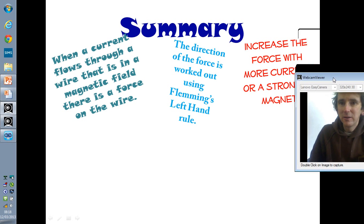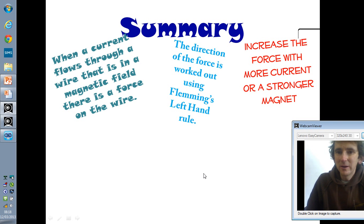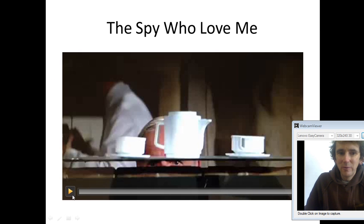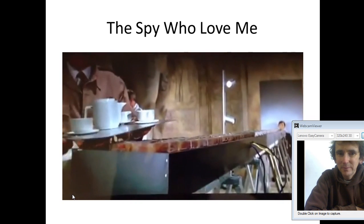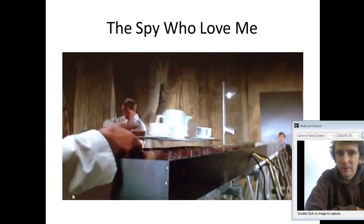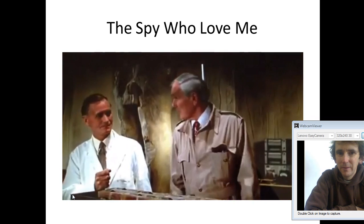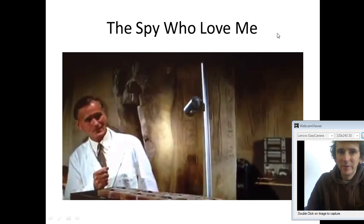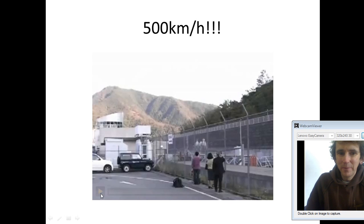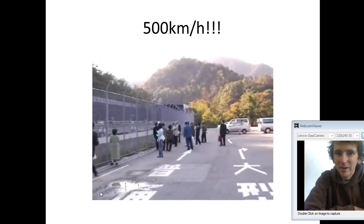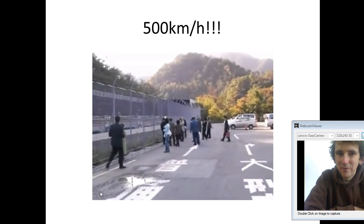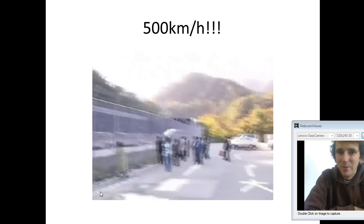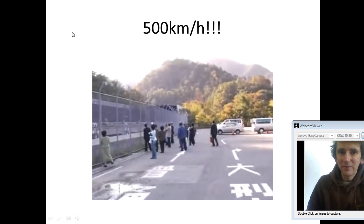We can increase the force with more current or a stronger magnet. Here's another example — from Japan. That train is moving at 300 miles an hour. That's a real train; you can get on that train and go through to the city at 300 miles an hour. It's floating on a magnetic field, being pushed along by the motor effect — Fleming's left-hand rule.